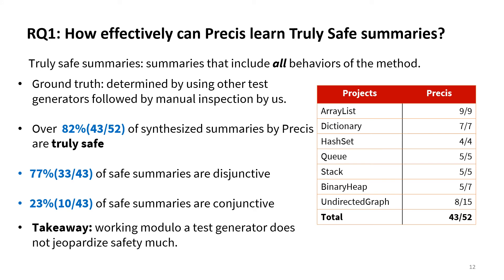The first research question asks how effective is Prissy at learning truly safe summaries. Truly safe summaries are summaries that include all behaviors of the method. We measure this by using other test generators and manual inspection. Over 82% of the contract summaries synthesized by Prissy are truly safe, and the majority of safe summaries are disjunctive. The results indicate that working modulo a test generator does not jeopardize safety much.